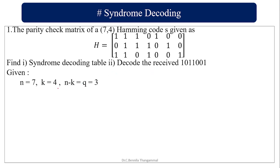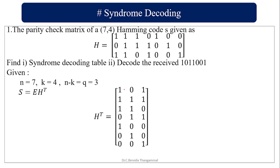Here N is 7, K is 4, and N minus K parity bits is 3. S equals E · H transpose. From H, the H transpose is obtained by converting rows into columns and columns into rows, giving the full 7×3 H transpose matrix.